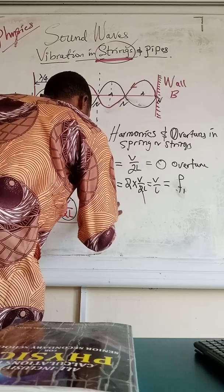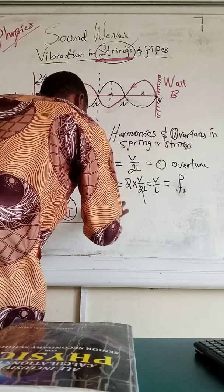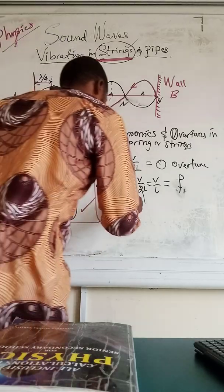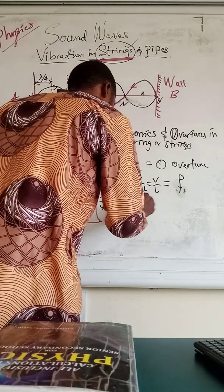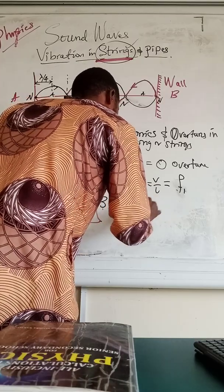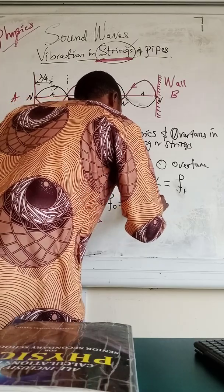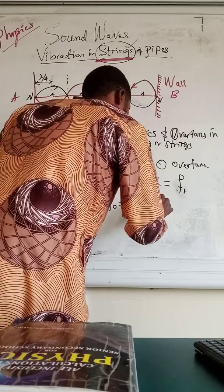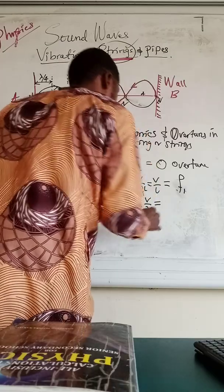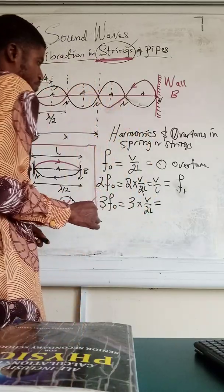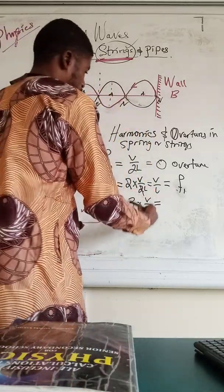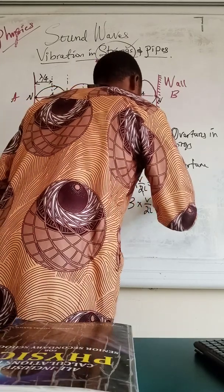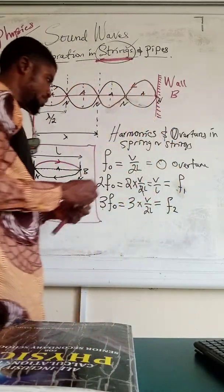The third harmonic, 3F naught, means 3 times V over 2L, which gives 3V over 2L. This is the second overtone.